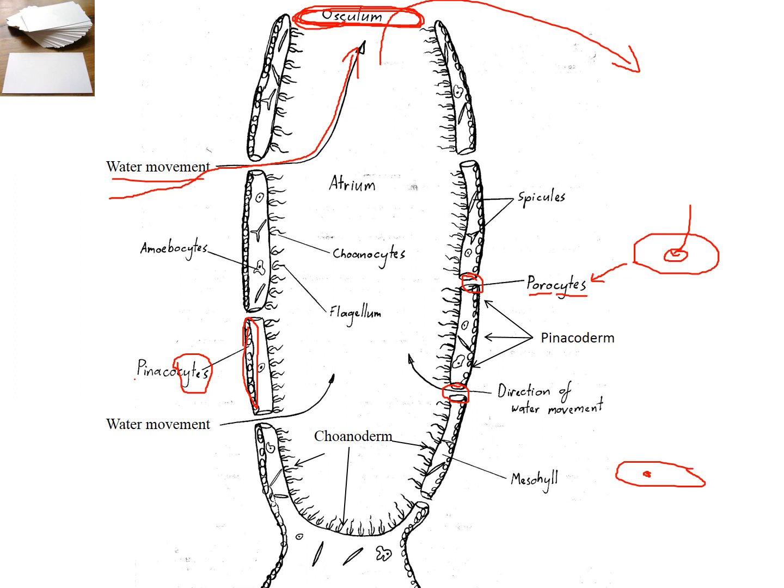So on the inside of the sponge body, we have a layer of cells which we'll look at in a little closer detail. And that layer is called the choanoderm. Derm means skin or layer. And that is made up of choanocytes, cells, choanocytes. And I forgot to mention that pinacoderm is the layer made up of pinacocytes. So once you start putting these together, they should start to make sense. Choanoderm is made up of choanocytes.